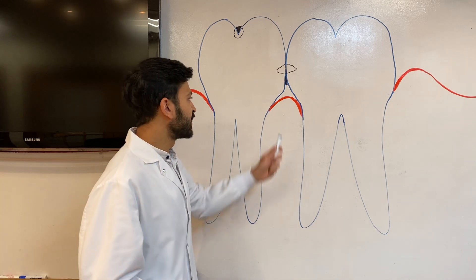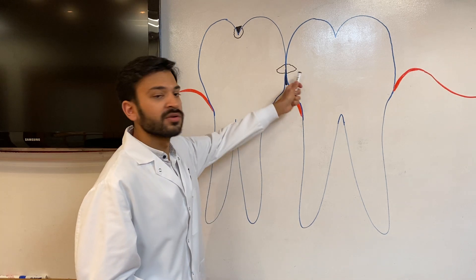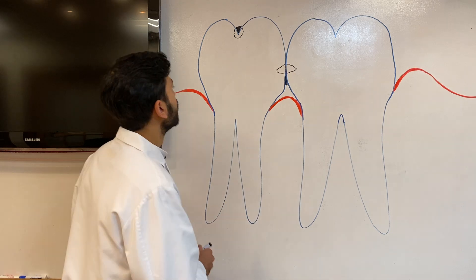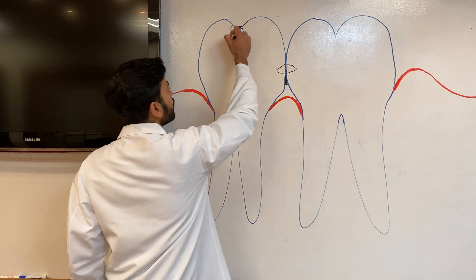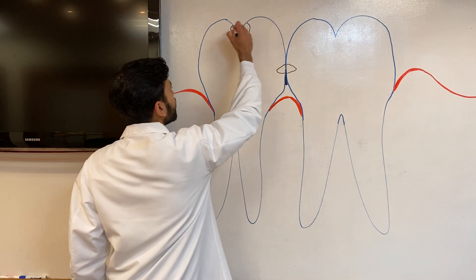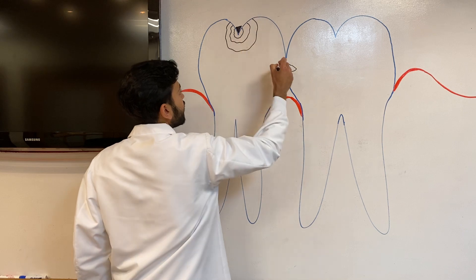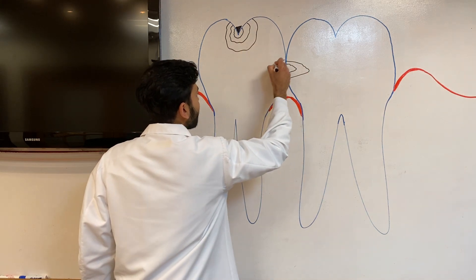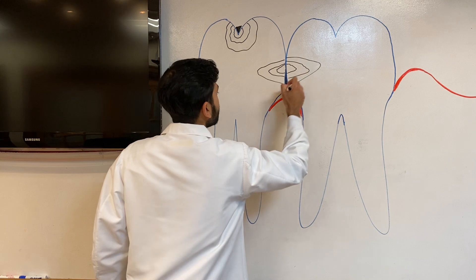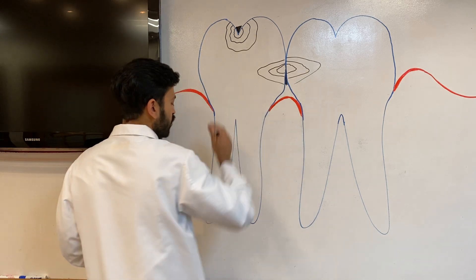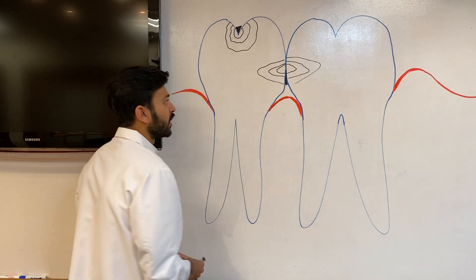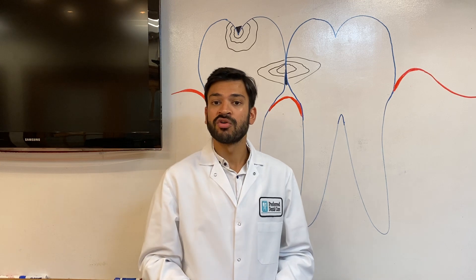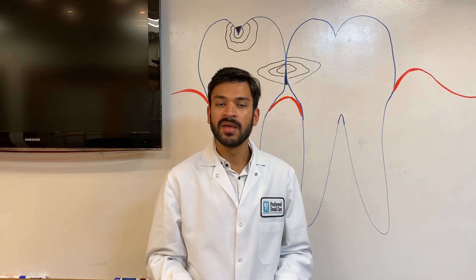We call them kissing cavities because usually when there's one, there's actually two — one causes another. Over time the bacteria and acid keep eating away at the tooth, causing big cavities that eventually get into the nerve, which is the middle of the tooth, causing a lot of pain. Eventually you may end up needing even more treatment than just fixing the cavity.